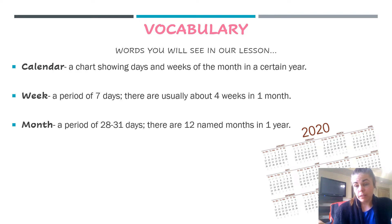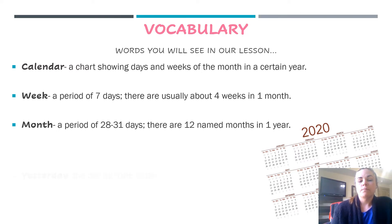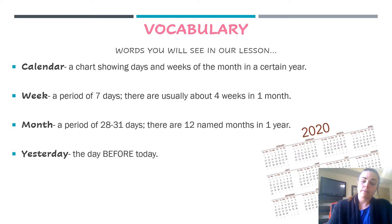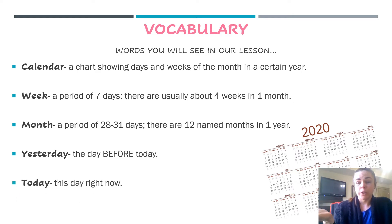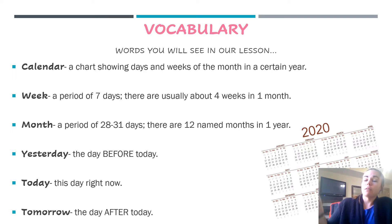A month is a period of 28 to 31 days, depending on which month — some are a little bit longer than others, but it can be anywhere from 28 to 31 days, and there are 12 named months in a year. Yesterday means the day before today. Today is this day right now, the day that you're in at this very moment. And tomorrow is the day after today. You're going to hear those words a lot through this lesson.